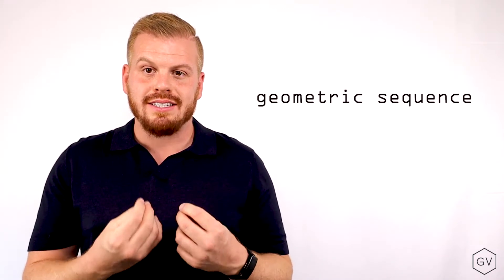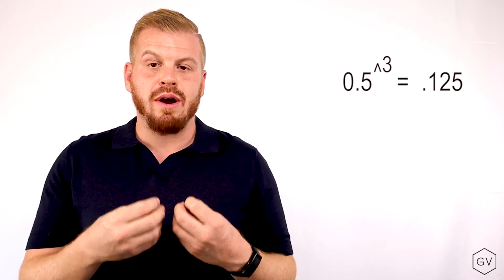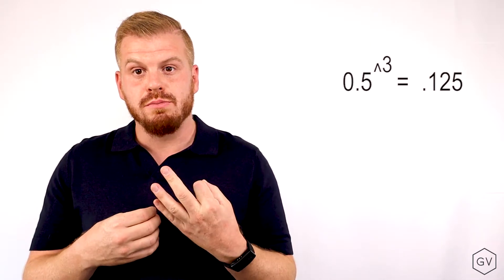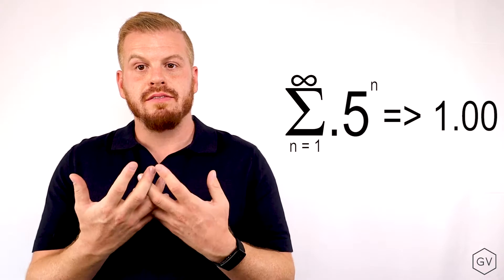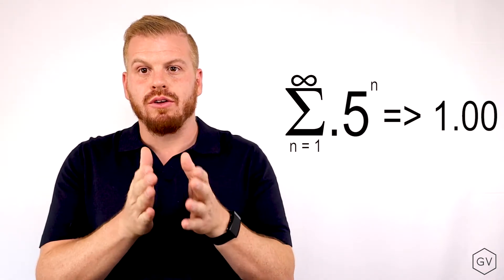The original white paper uses a geometric sequence weighting scheme, where the first option has a weight of 0.5 to the one, or one half. The second option has a weight of 0.5 squared, or a quarter. The third option has a weight of 0.5 cubed, or an eighth, and so on. This geometric weighting scheme will have a cumulative weight that asymptotes to one as you add all the weights together.